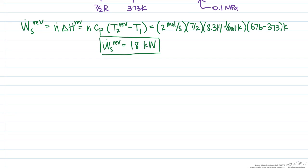And so to actually compute this efficiency, we just divide the reversible work by the actual work to get an efficiency of 18 divided by 25, which is equal to 72%.